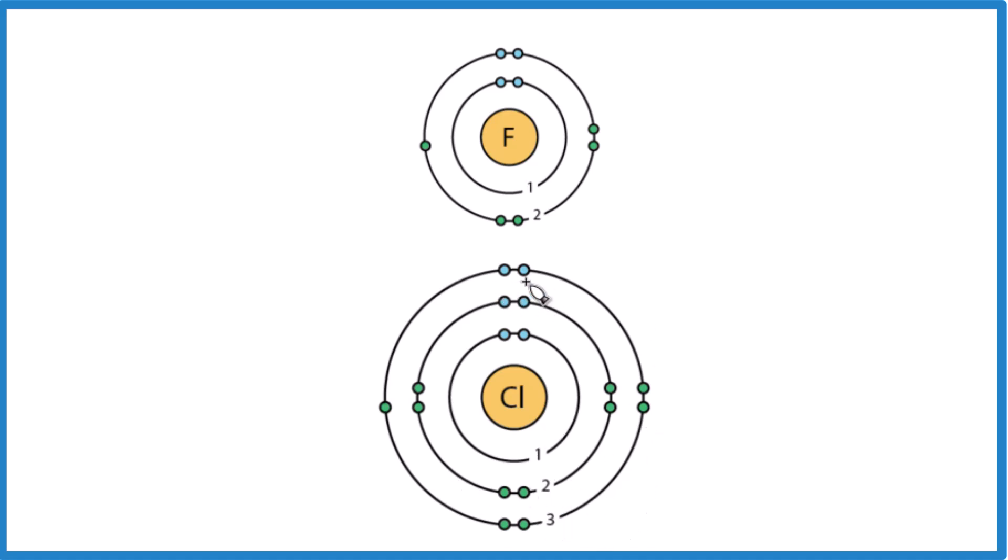Chlorine's a bigger atom and there's an extra electron shell or energy level. That means it's going to shield whatever tries to bond with it from the positive nucleus. Because of that, it won't pull the electrons in the bond very well. It's less electronegative. Fluorine, on the other hand, its positively charged nucleus is closer to whatever it bonds to and it can pull those electrons towards it. It's very electronegative. That's the first trend.